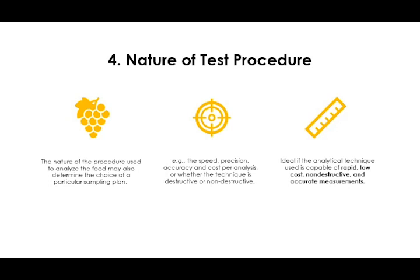Once you have looked at the nature of your population, you also need to look at the nature of your test procedures, as these will determine how you choose your sampling plan. You need to consider the speed, precision, accuracy, and cost per analysis, and whether the techniques are destructive or non-destructive. Ideally, you want analytical techniques to be rapid, low cost, non-destructive, and accurate, but in most cases you are not able to achieve all these properties.